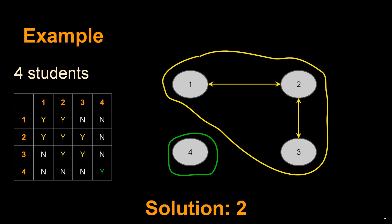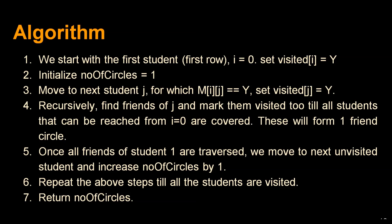Now let's look at the algorithm. Start with the first student (row i=0). Set visited[i]=Y and initialize the number of circles to 1.